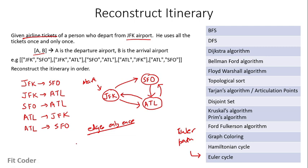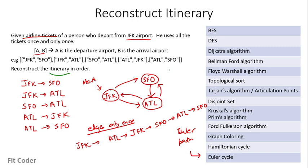The route can be: from JFK he goes to ATL, then back to JFK, then to SFO, then to ATL, and then to SFO again. If we just print the Euler path for this graph, we get the itinerary. Implementation of the Euler path is available in my GitHub repository and the link to the algorithm is in the description.